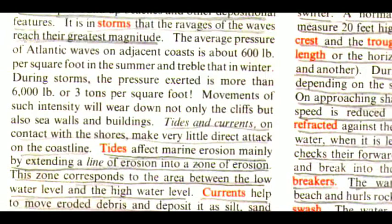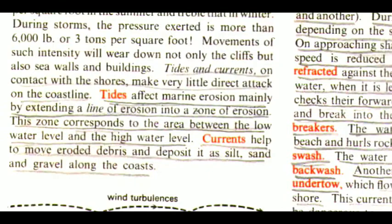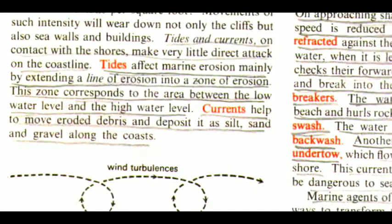The average pressure of Atlantic waves on the adjacent coasts is about 600 lb per square foot in the summer and double that in winter. During storms, the pressure exerted is more than 6000 lb, or 3 tons per square foot. Movements of such intensity will wear down not only the cliffs but also sea walls and buildings. Tides and currents on contact with the shores make very little direct attack on the coastline. Tides affect marine erosion mainly by extending a line of erosion into a zone of erosion.